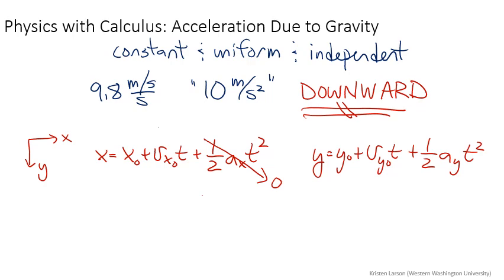And in the Y-direction, we use this number so often, this acceleration due to gravity, that we give it a name. We call it G, 10 meters per second squared.